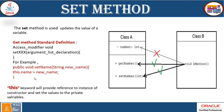Similarly, we have a setter method. The Set method is used to update the value of a variable that is privately defined. Whenever the user tries to access that private variable directly, it will show an error — it has to go through the Set method. The standard definition of a Set method is: access modifier, void (since it's not returning any type), set method name, and argument list declaration. For example: public void setClientName(String newName), and the new name is assigned using the this operator.